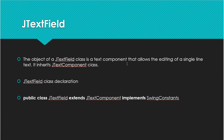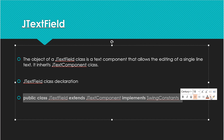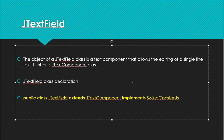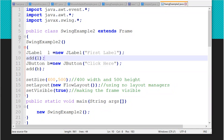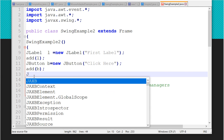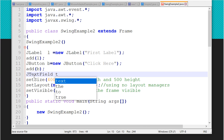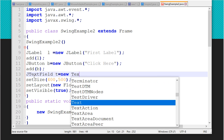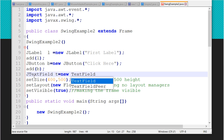Now we look at JTextField. The object of JTextField class is a text component that allows editing of a single line of text. Unlike JLabel, which only allows reading, JTextField allows the user to enter data from the keyboard. The class declaration is: public class JTextField extends JComponent implements SwingConstants.